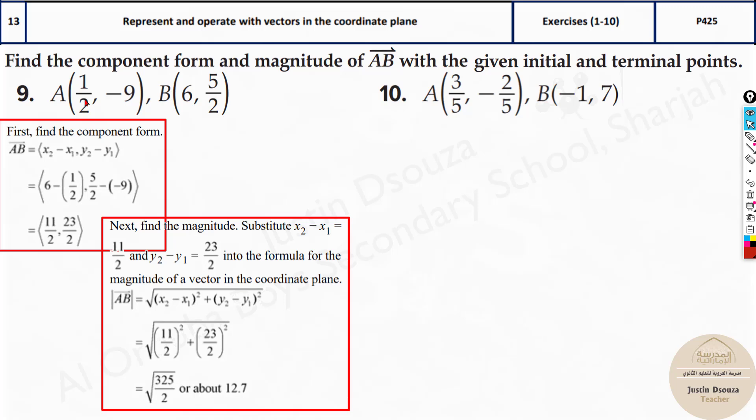Over here we have fractions. That doesn't make any difference because all you need to do is x2, 6 minus 1/2 and over here 5/2 is basically 2.5. You can write it as 5/2 in your calculator easily. Minus of minus 9 would be plus 9. So these are the answers and then square them up, add them up and take the square root of them. That will be the magnitude.